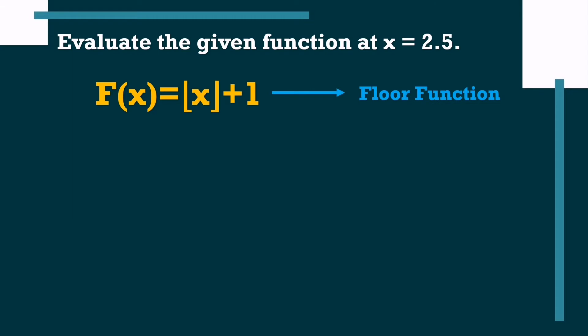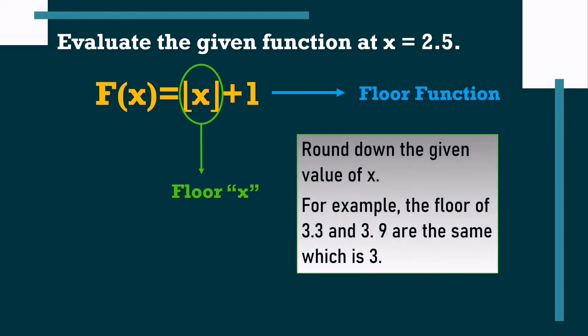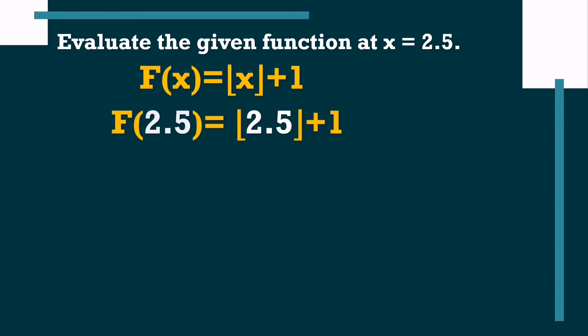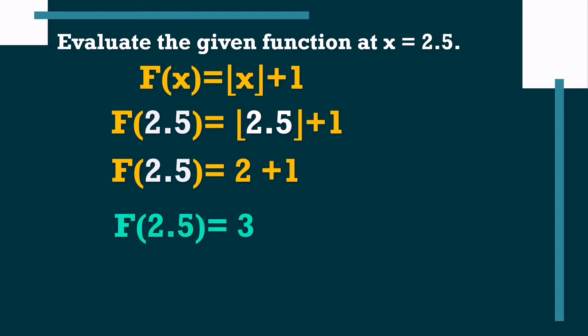The next function is an example of a floor function. This symbol is read as "floor x." When you see this symbol, you need to round down the given value of x. For example, the floor value of both 3.3 and 3.9 is 3. Evaluating f(x) equals floor(x) plus 1 at x equals 2.5: floor of 2.5 is 2, so f(2.5) equals 2 plus 1. Our final answer is 3.